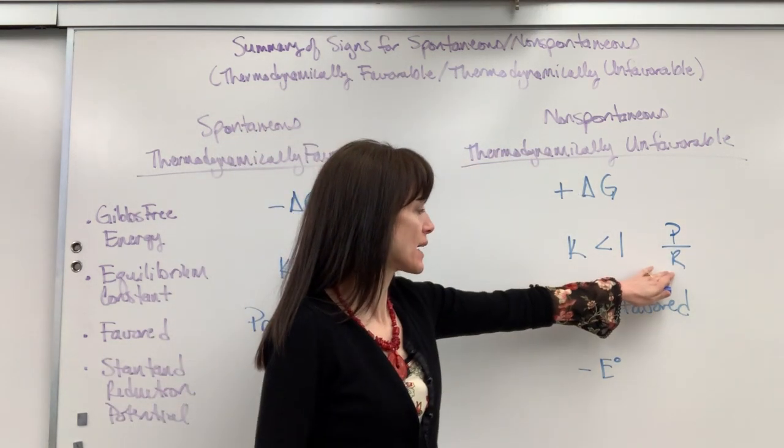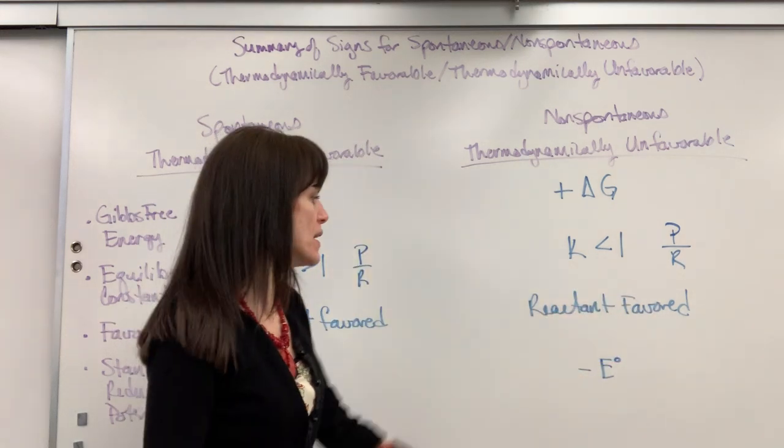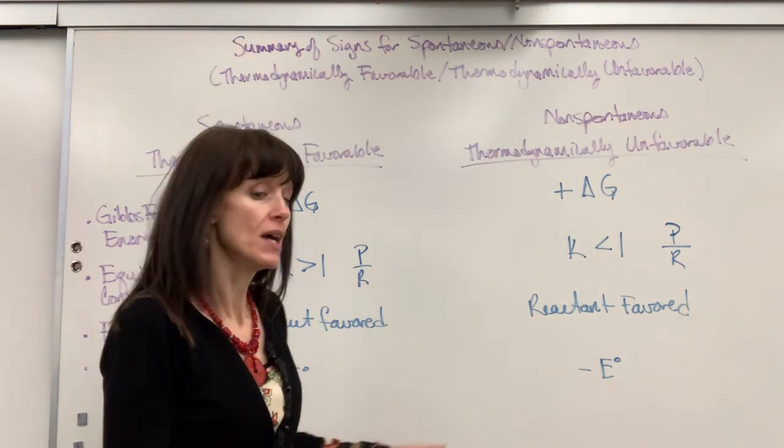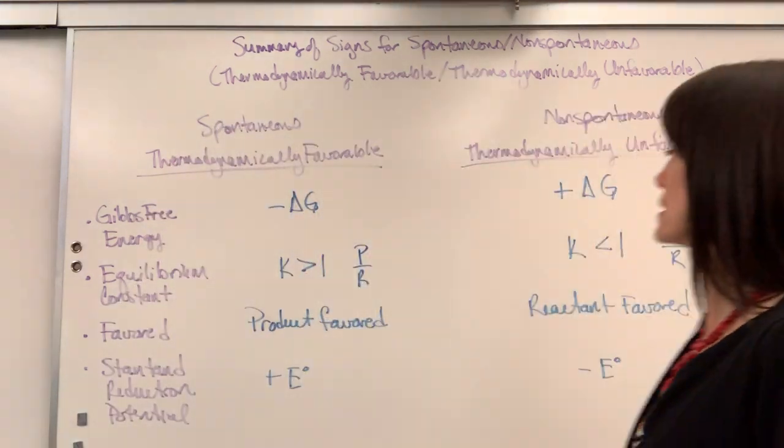So, if you have more reactants, a larger denominator, you're going to have a value less than 1. And then the potential is going to be a negative E. And there you have it, a really good summary.